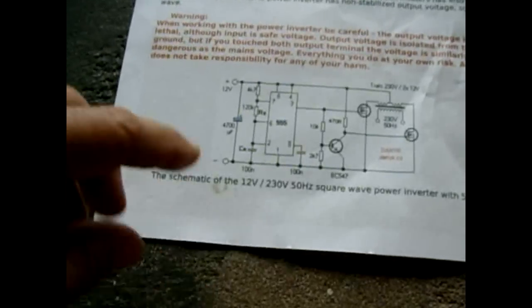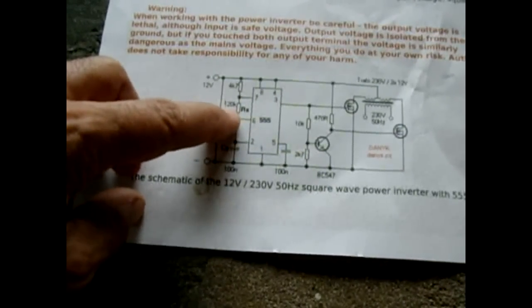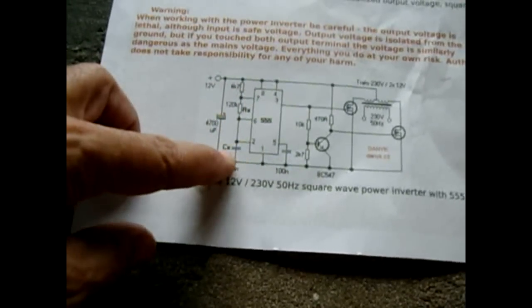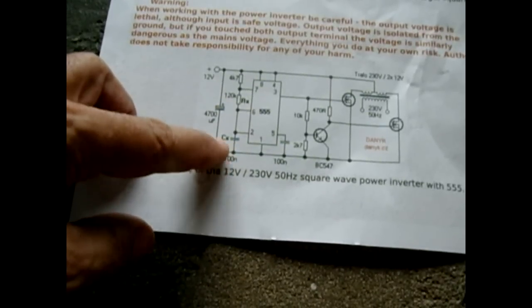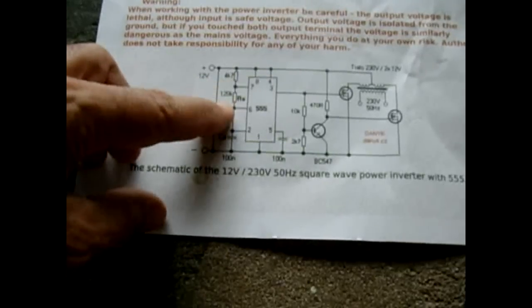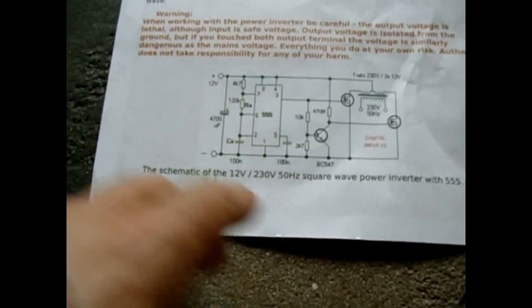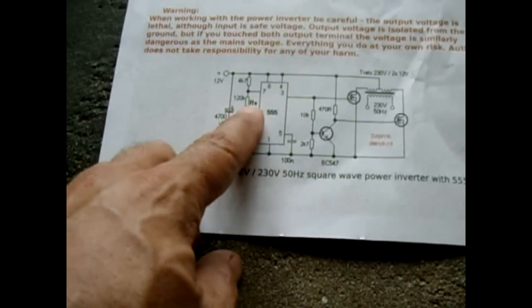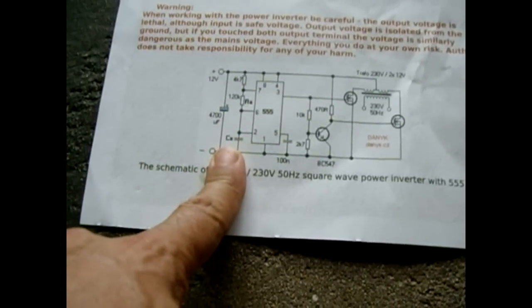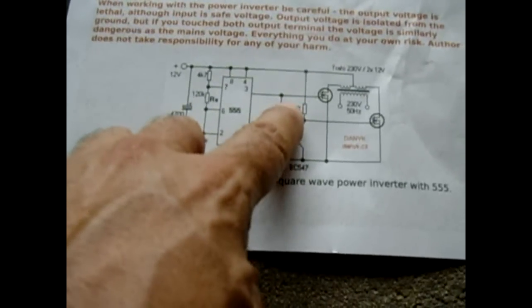But I changed this around. I put a 100k potentiometer in between pins 6 and 7, and I made the resistor 18k, and I made this capacitor between pin 2 and ground a 0.22 microfarad. And that allows me to adjust between 30 hertz and like 200 hertz. So this whole thing is perfect. You can use the 100k potentiometer, 18k resistor, and you can make this right here a 0.22 microfarad. Everything else stays the same.